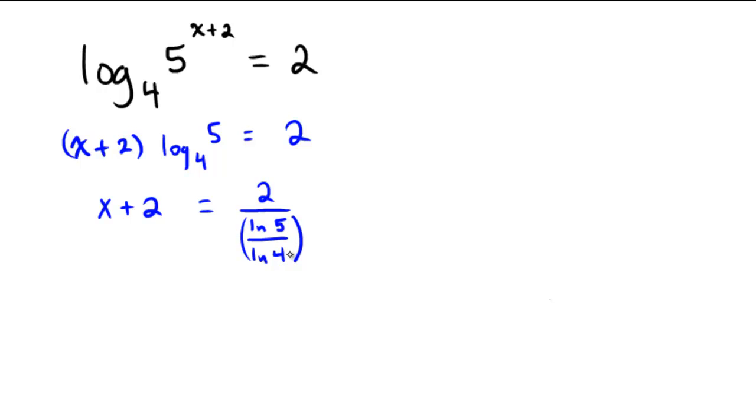Now I'm going to subtract 2 from both sides, so as I subtract 2, I'm going to end up getting x over here, and on this side, because I'm dividing by this fraction, I'm going to multiply by the reciprocal and say 2 ln 4 over ln 5 subtracted by 2. So that would be an exact answer.